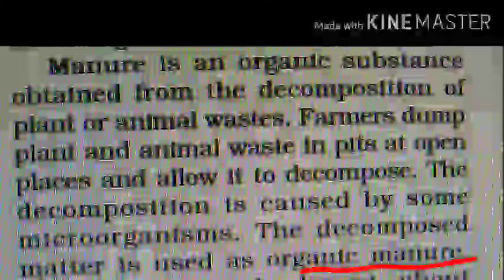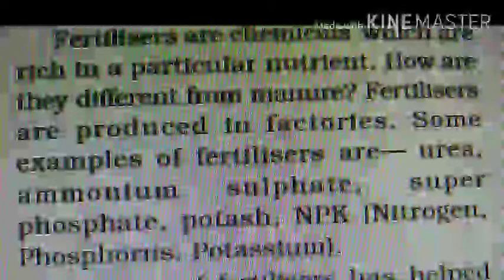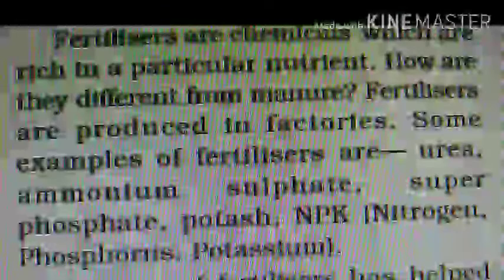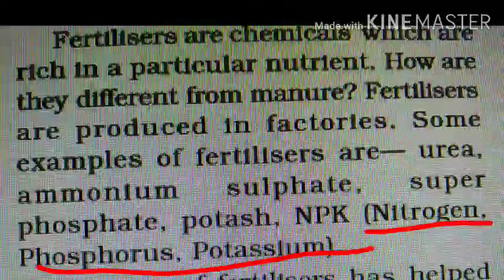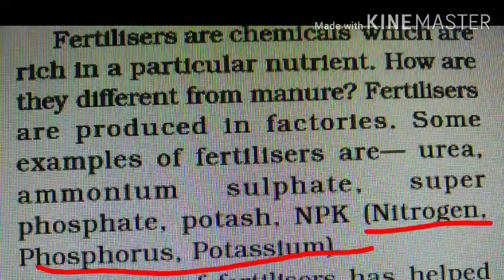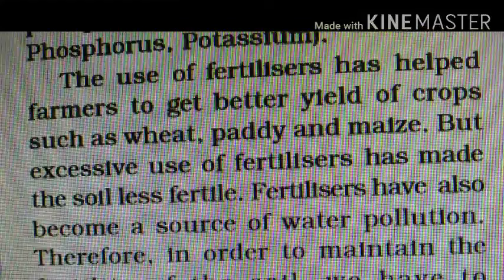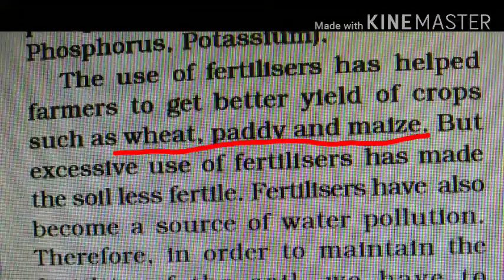Fertilizers are chemicals which are rich in a particular nutrient, and these fertilizers are produced in factories. Some examples of fertilizers are urea, ammonium sulfate, superphosphate, potash, and NPK, which means the combination of nitrogen, phosphorus, and potassium salt. The use of fertilizers has helped farmers to get better yield of crops such as wheat, paddy, and maize.